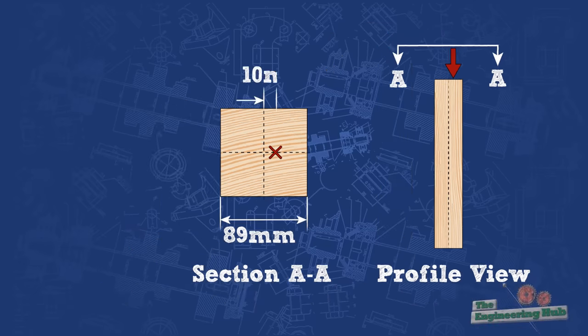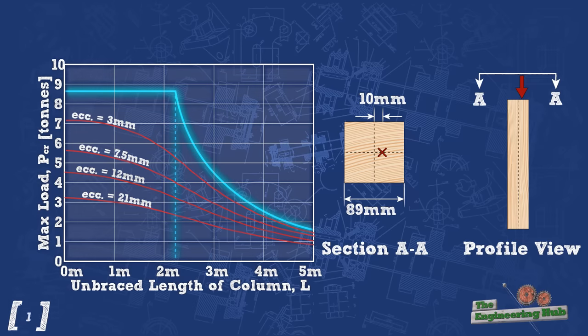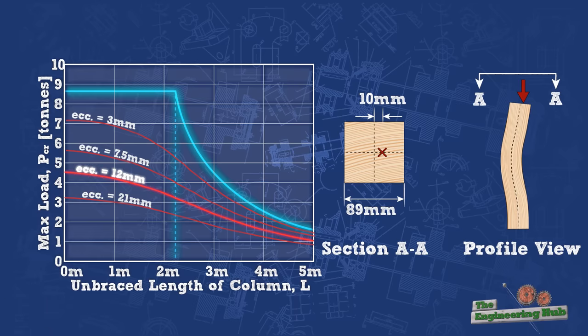For example, applying the load only 10mm off-center lowers its capacity by nearly 50% when it comes to timber posts.